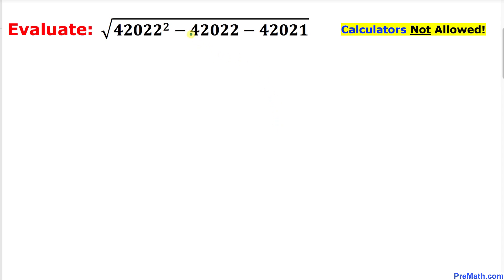Welcome to PreMath. In this video lesson, we are going to find the value of this radical problem: square root of 42022 squared minus 42022 minus 42021, and we are not supposed to be using calculators of any kind.